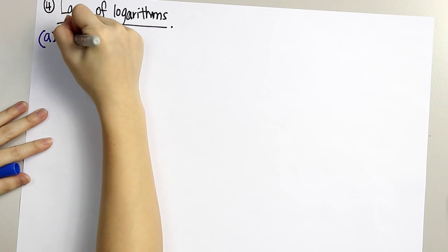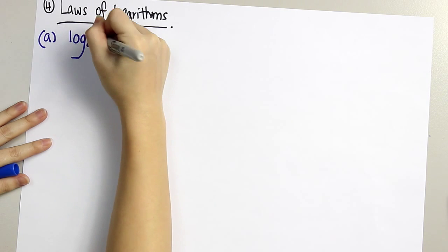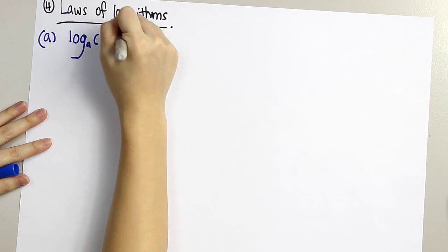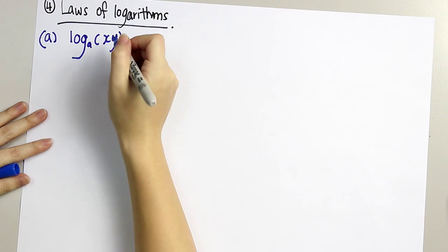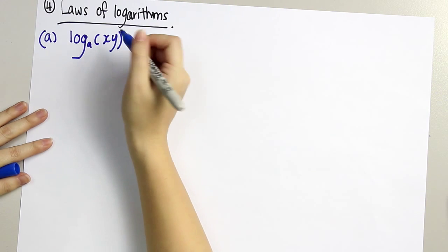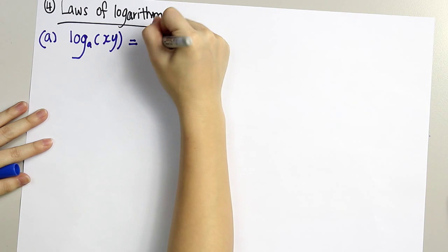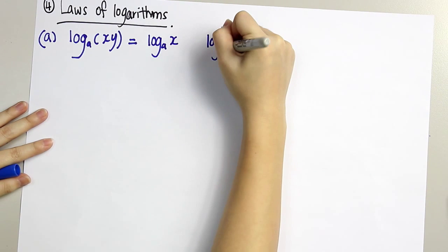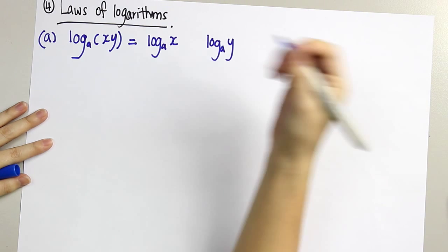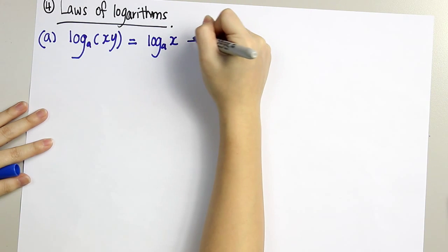So it's actually for the solving of equation. Log base a of x times y. If it's multiplication, we separate it both. So it will become log base a of x and log base a of y. For multiplication, it will become addition.